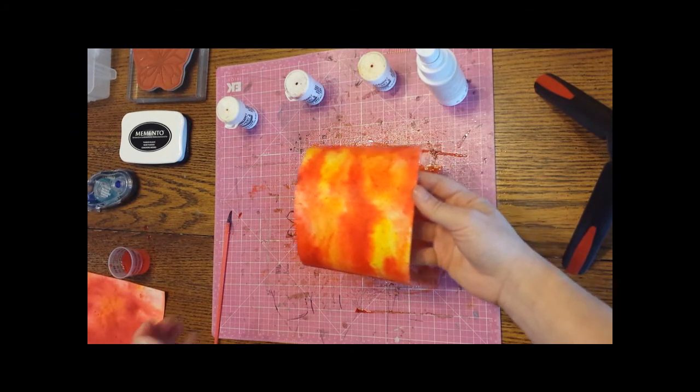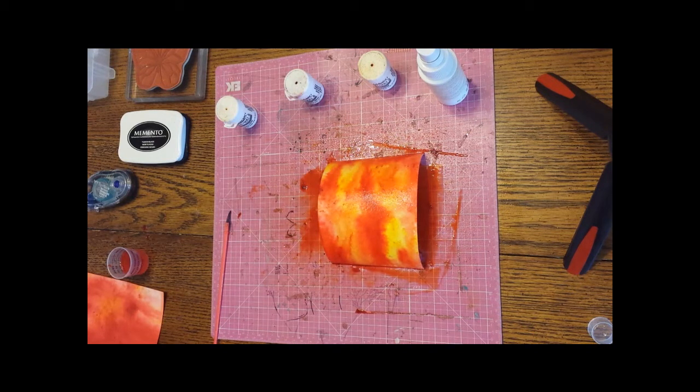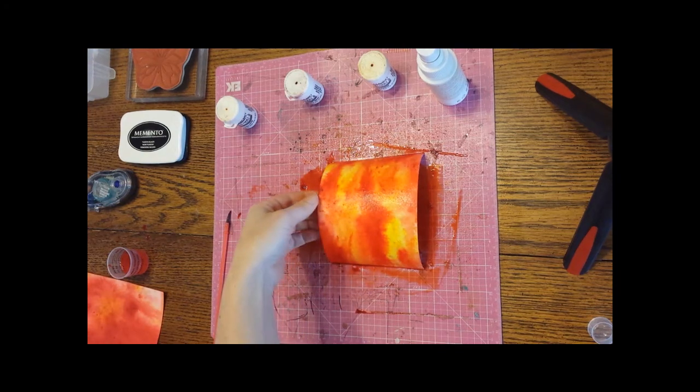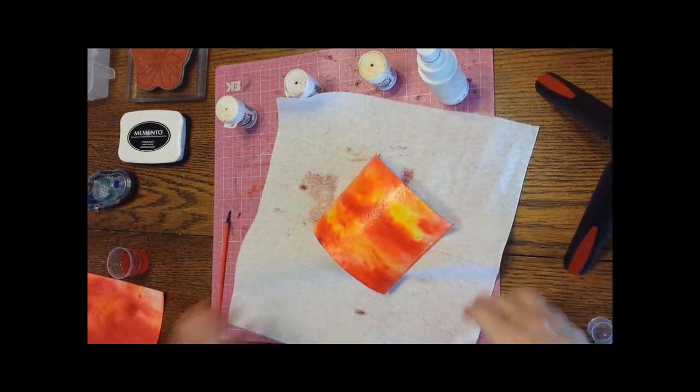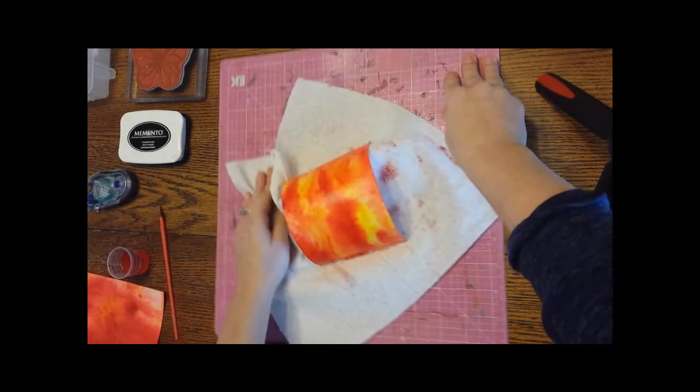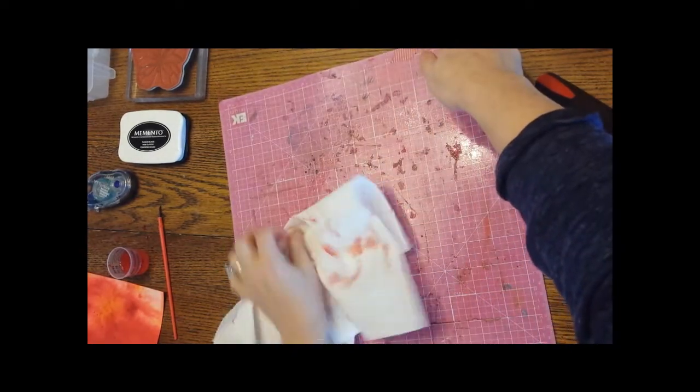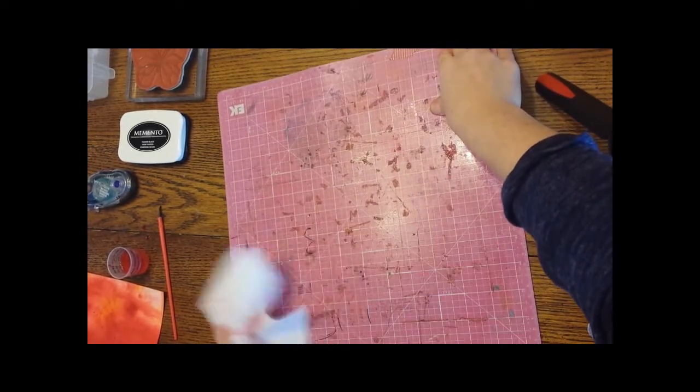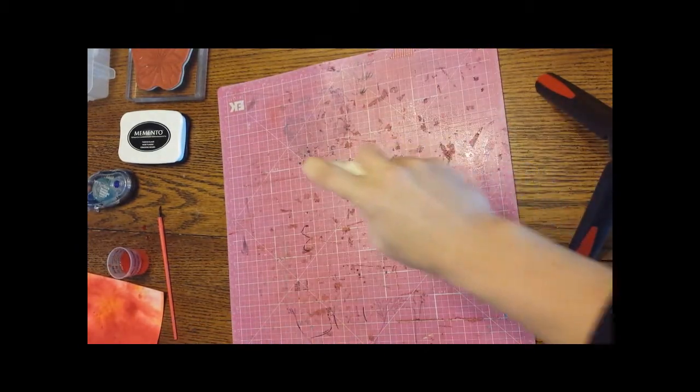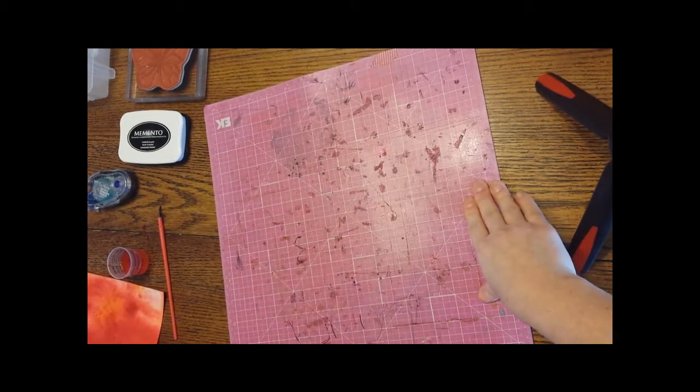So this one is more orangey and red versus this one which has got a lot of yellow in it. I'm just going to get some paper towel and wipe this up so that we can get going to the next step. And then I'll share with you how to do the butterfly, which is really easy. That's probably the easiest part here. This is really easy to clean, just wipe it down if you need to spray with a little bit of water.